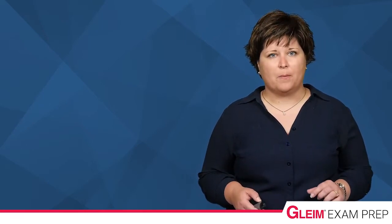Let's go through an example of this concept together. On March 1, 2017, we purchased a new machine with a cost of $40,000. We also pay $1,000 for shipping costs and a $2,000 installation fee. When purchasing PP&E, we capitalize all the costs necessary to get the asset ready for its intended use. In this example, that means we capitalize the shipping and installation, which makes the total cost of the asset $43,000.